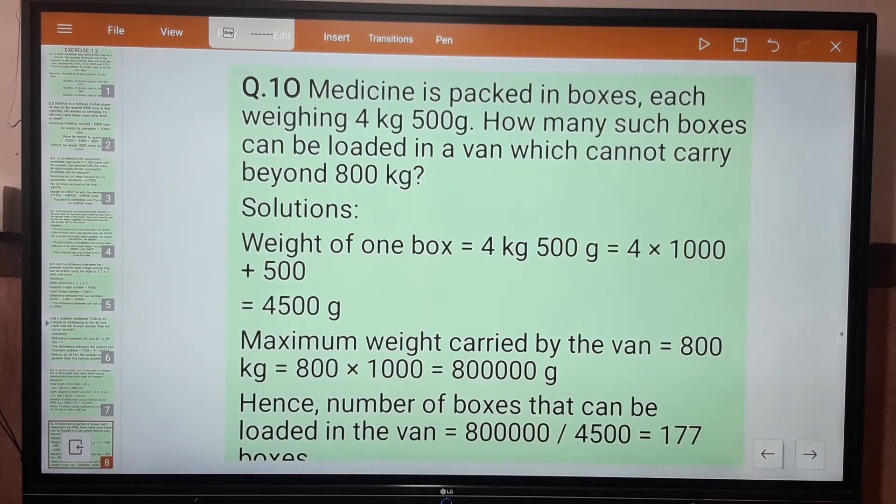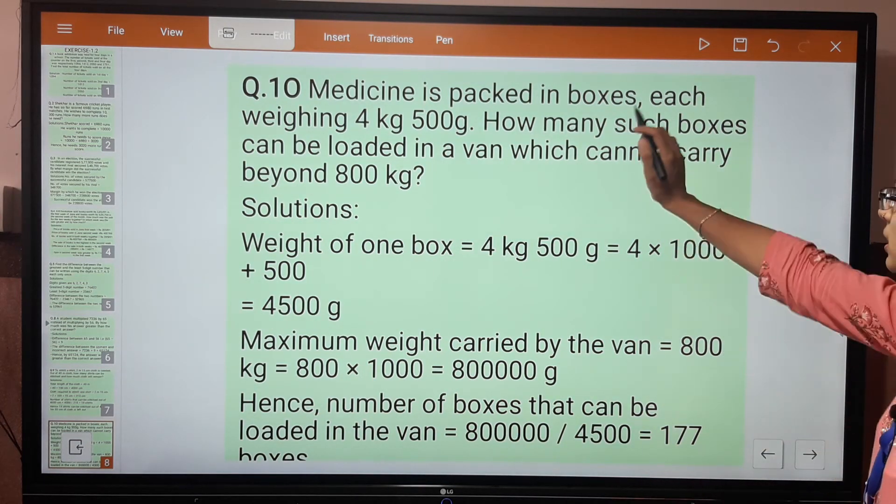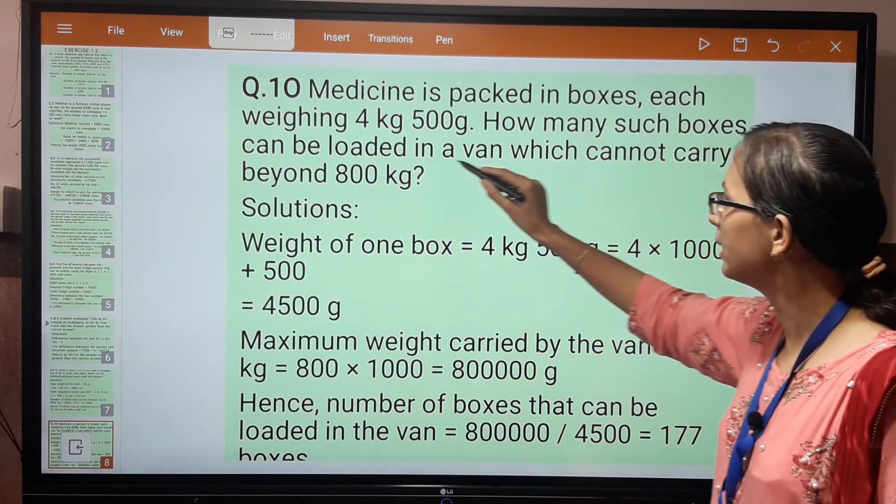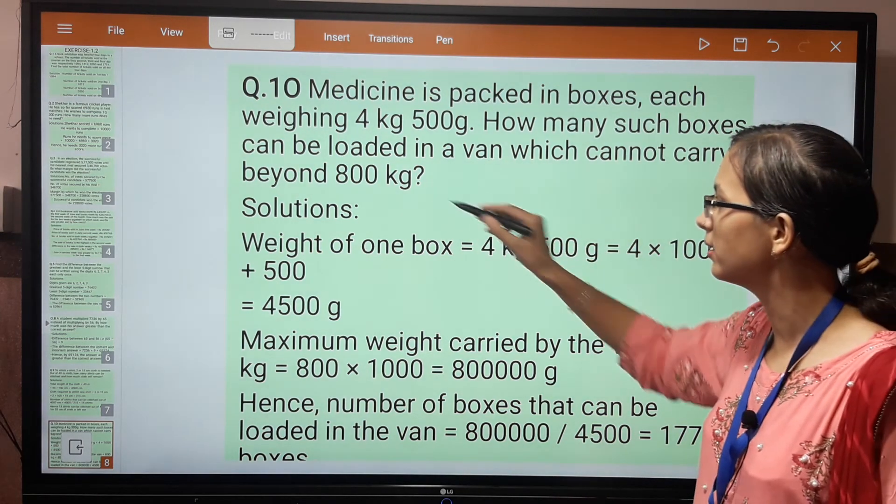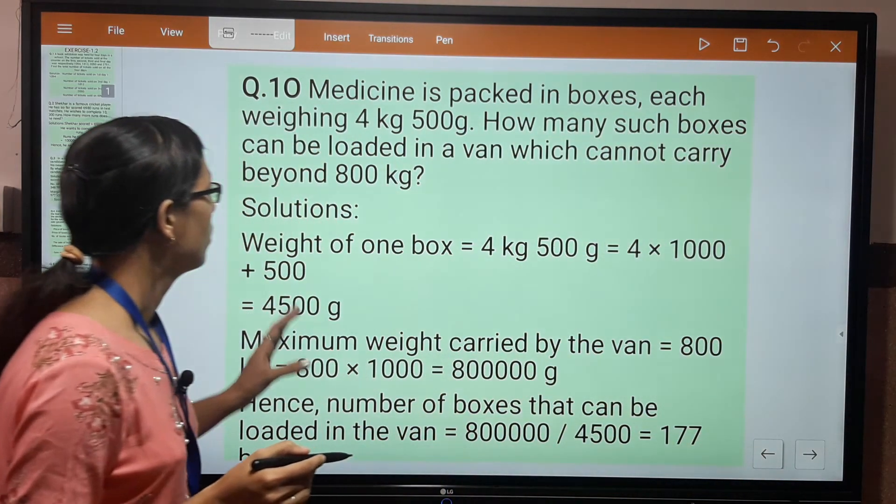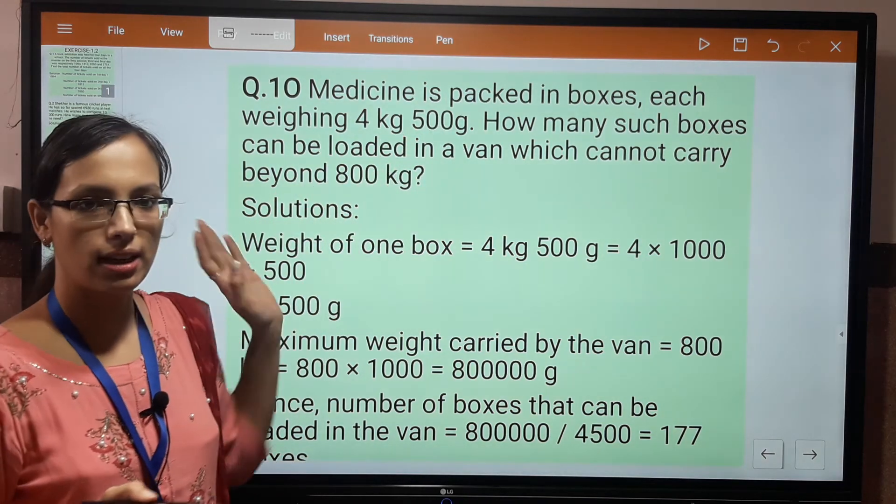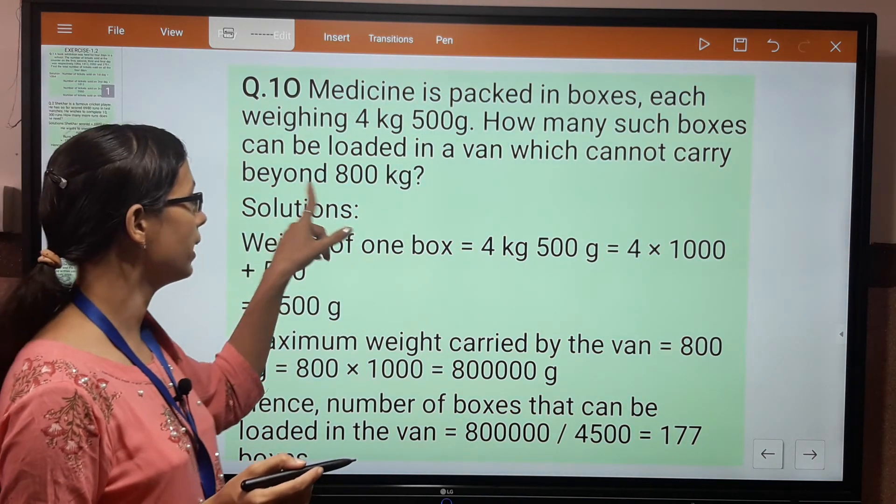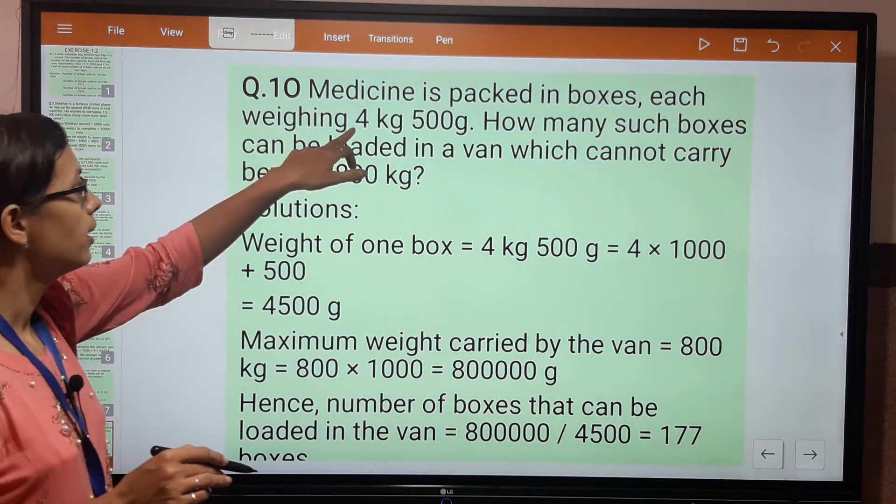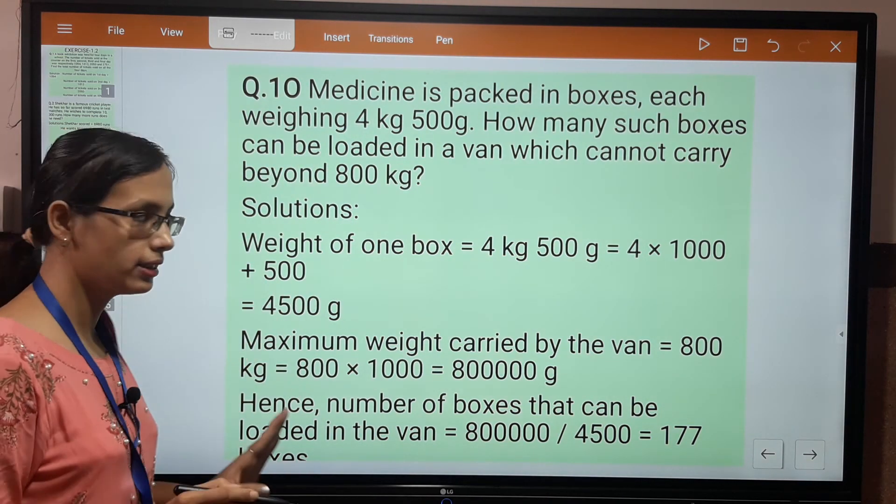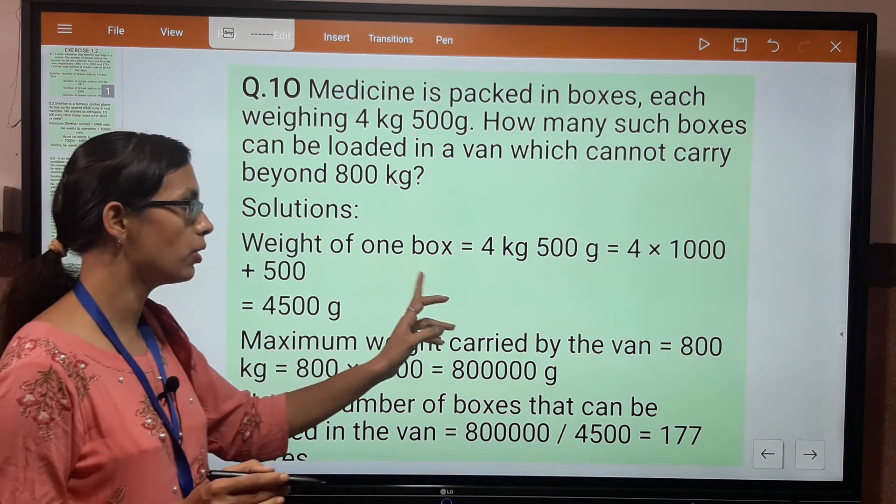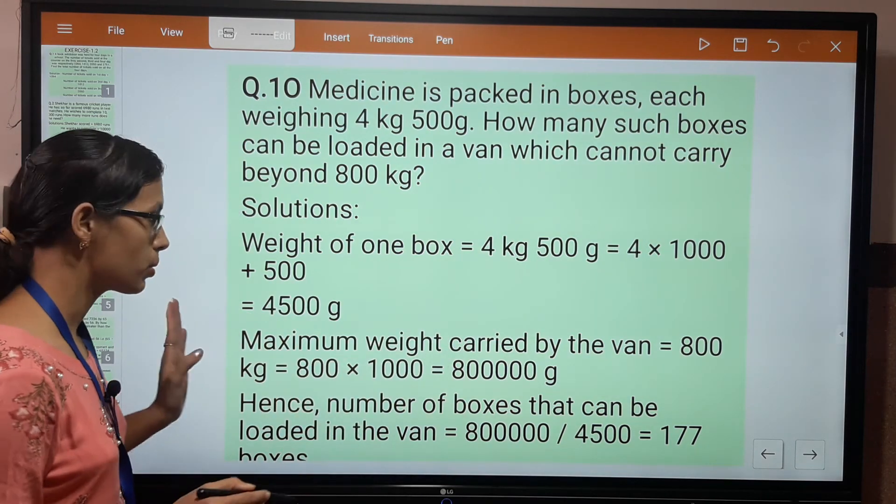Question 10: Medicine is packed in boxes, each weighing 4 kg 500 grams. How many such boxes can be loaded in a van which cannot carry beyond 800 kg? Each medicine packet is 4 kg 500 grams, and the van cannot carry more than 800 kg. We need to find how many packets can fit in the van.